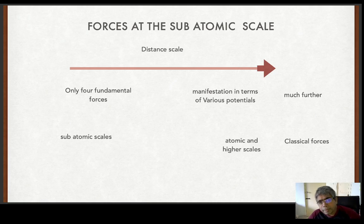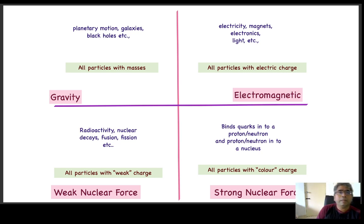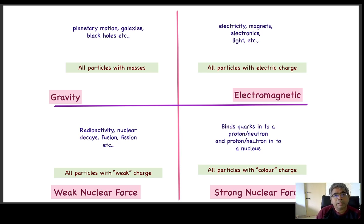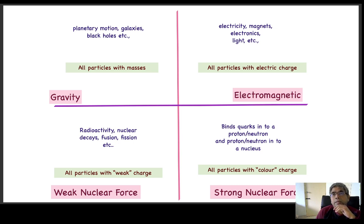To summarize: we have four forces. Classical gravity is responsible for planetary motion, galaxies, black holes. At relativistic scales it gets modified — there is the special theory of relativity and the general theory of relativity. The electromagnetic force has both classical and quantum mechanical manifestations, and at the classical level is responsible for electricity, magnets, electronics, light, and so on, for all particles with electric charge.